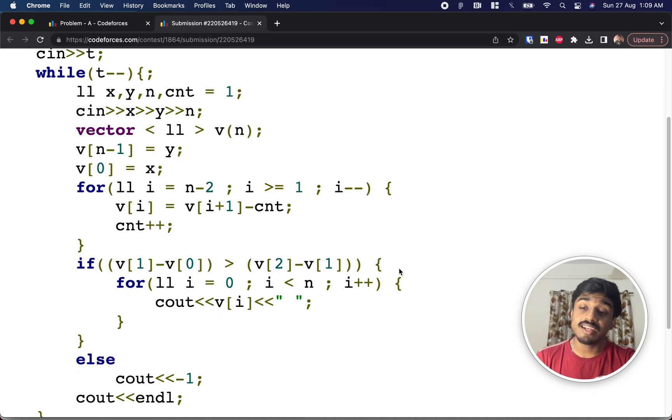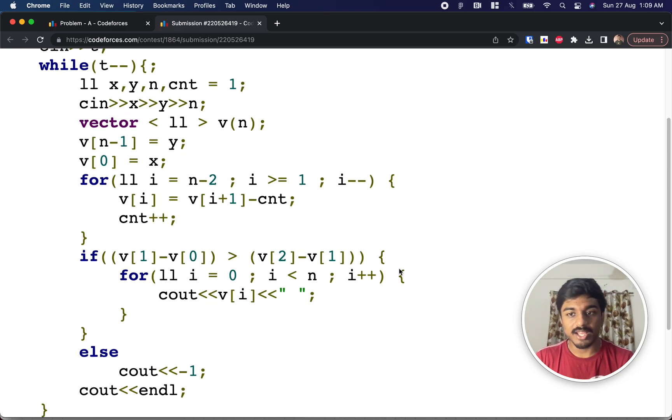Then after everything is done I am taking the first two elements difference is greater than the next two elements. Then I can definitely say that the answer always exists and I am simply printing the array. So that's it guys, it's a very simple problem but we have to know how to actually generate that approach, that's all.